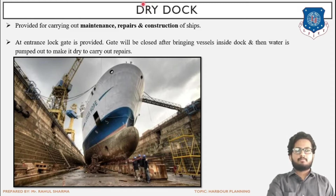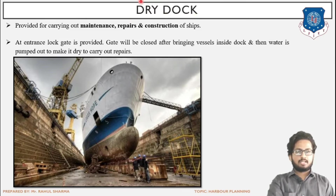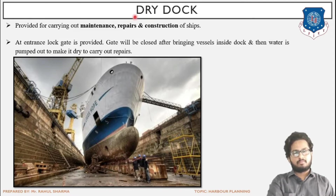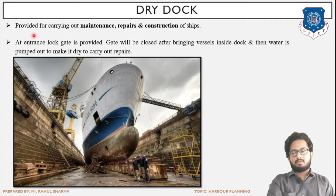The term used along with dock is 'dry' because there is an absence of water. Water has to be removed. The reason for it is that at the time of carrying out the maintenance or repair work we need that space in dry state. If water is existing then we will not be able to carry out the repair or maintenance work. This image shows a dry dock provided for carrying out maintenance, repair, and construction of ships — that is its main function.